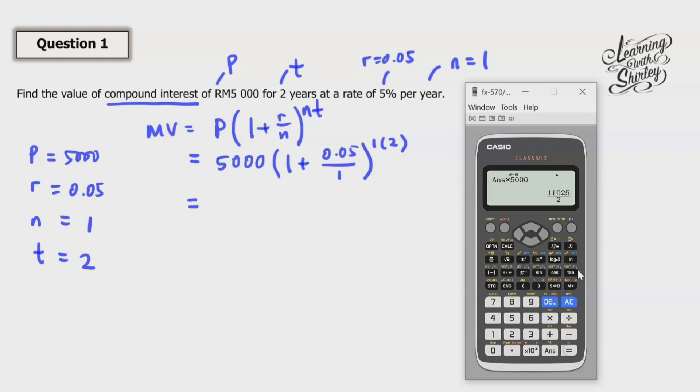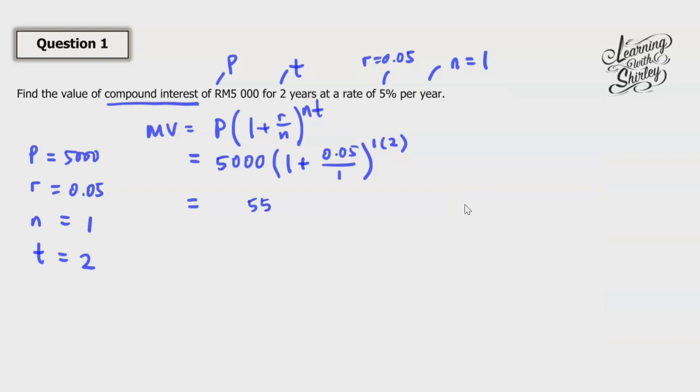So equals. So I'm going to change it to decimal. So it's 5512.5. So it's 5512.5. Because Malaysian currency, we use RM.